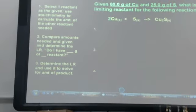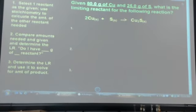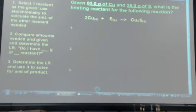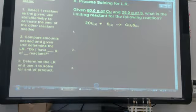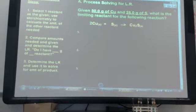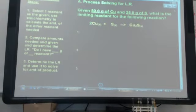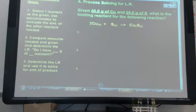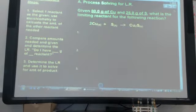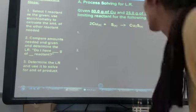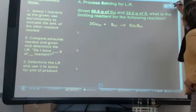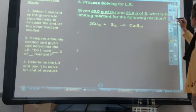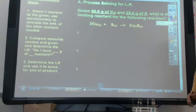So now we're going to look at the problem on the board on the right hand side of your screen. As I look at this problem, we are given 80 grams of copper and 25 grams of sulfur. And we need to determine what is the limiting reactant for the following reaction. And I have an equation up on the board. I'm going to follow those steps that we just discussed as I solve this on the board.